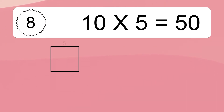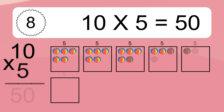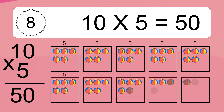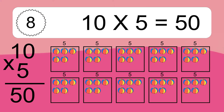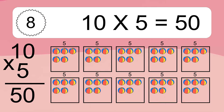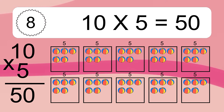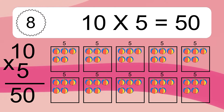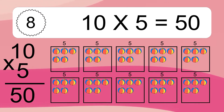Ten times five equals what? We have ten boxes and each box has five colorful balls inside. If you count all the balls in all the boxes together, you will have ten times five balls. This equals 50 balls.